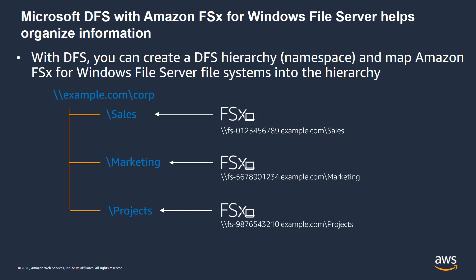Now your users just need to know that to access the file share, all they have to do is go to example.com/corp and they'll see the file shares underneath it. They won't need to memorize or know the Amazon FSx for Windows File Server file system DNS names to access.